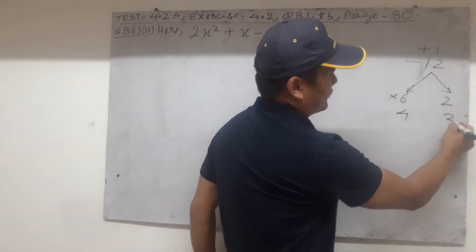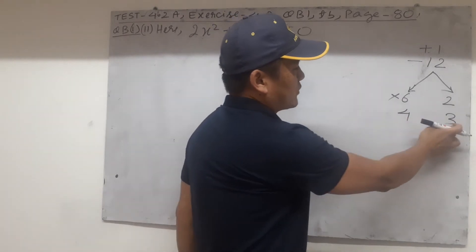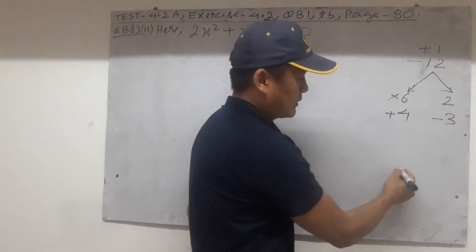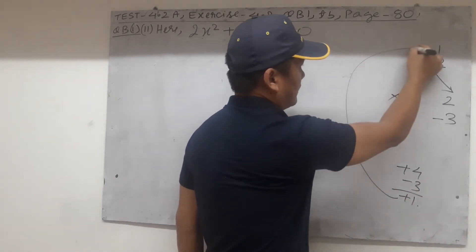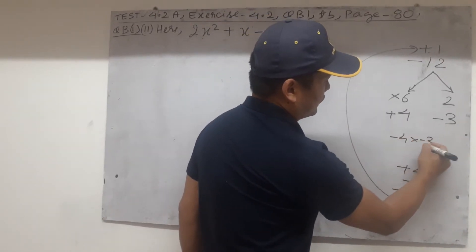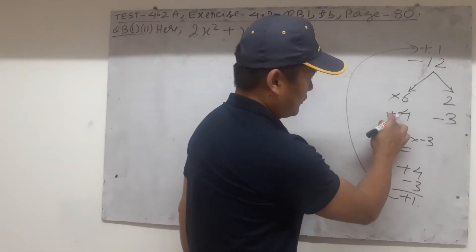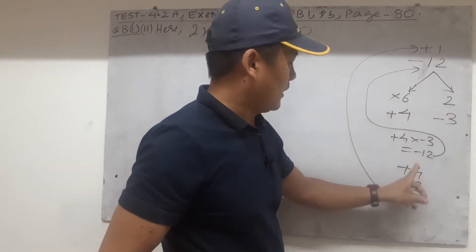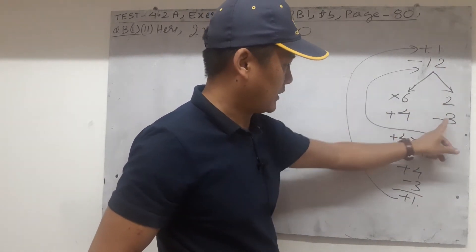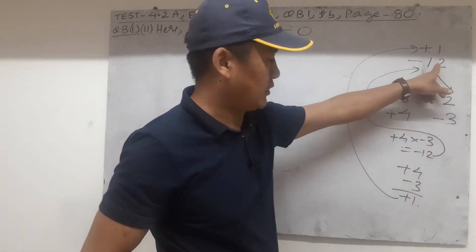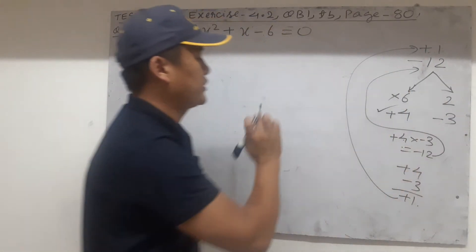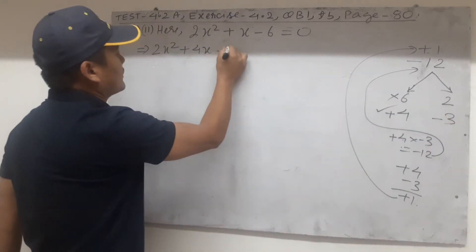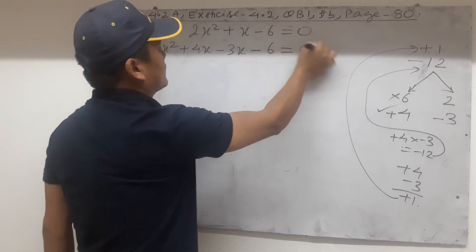Since middle term is plus, put bigger one plus and smaller one minus: plus 4 and minus 3. Then plus 4 minus 3 gives plus 1, exactly matching the middle term. Multiply plus 4 into minus 3: plus into minus is minus, 4 threes are 12, so minus 12, exactly matching. So this is the correct one: plus 4 and minus 3 will replace the middle term plus x. So 2x squared plus 4x minus 3x minus 6 equals 0.